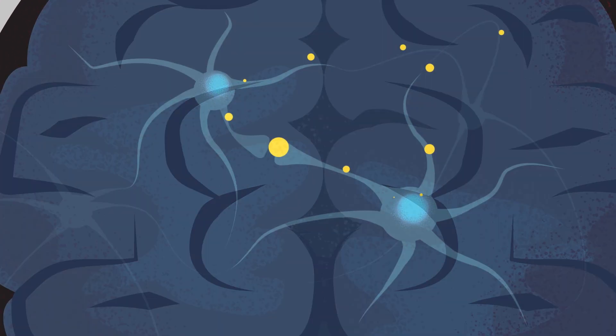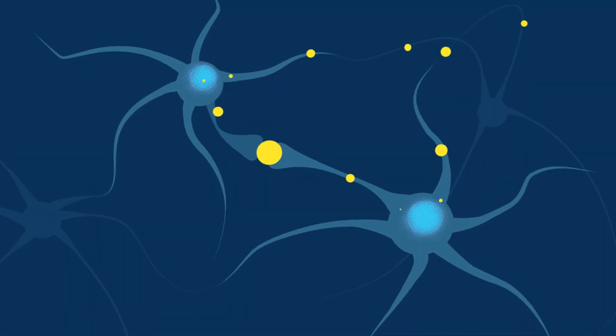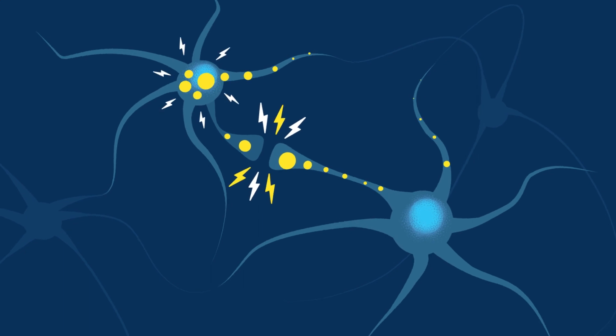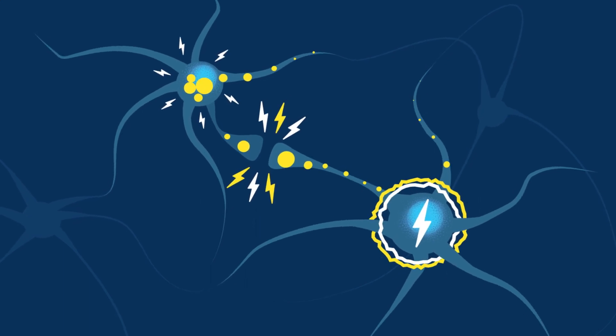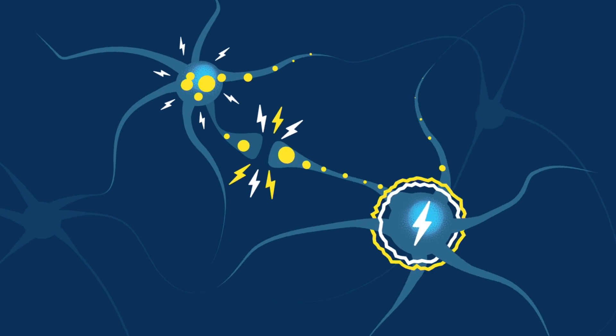This fast movement can cause the brain to bounce around or twist in the skull, creating chemical changes in the brain and sometimes stretching and damaging the brain cells.